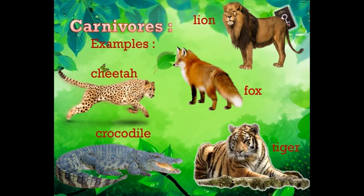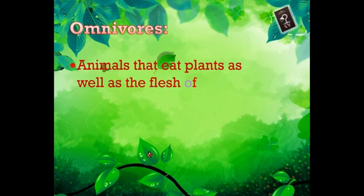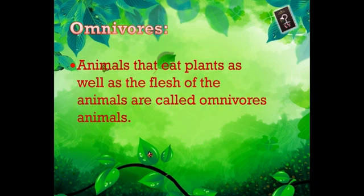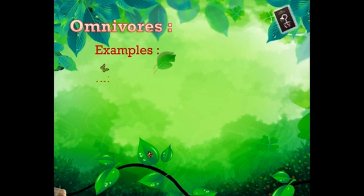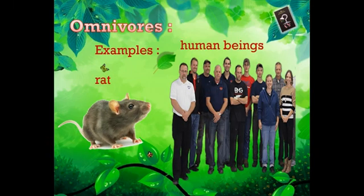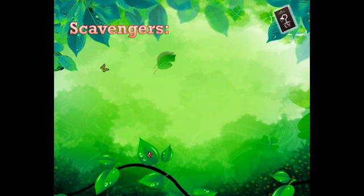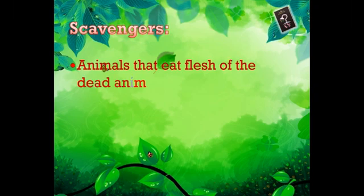Omnivorous animals are animals that eat plants as well as the flesh of other animals. This type of animal eats plant products as well as the flesh of other animals. Examples include human beings — they eat plant products as well as the flesh of other animals.